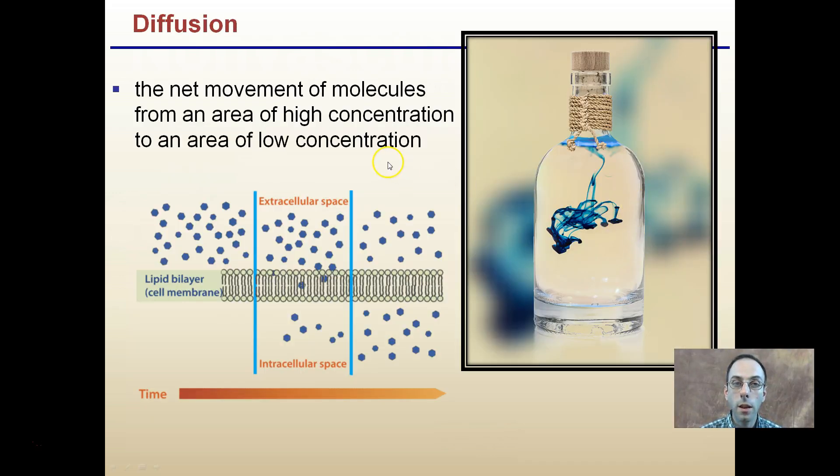So remember, diffusion is the net movement of molecules from an area of high concentration to an area of low concentration. You see here with the food dye in the bottle, it's diffusing throughout. If we came back a couple days later, this would all hopefully be a consistent blue color when everything diffused through the water in the bottle.